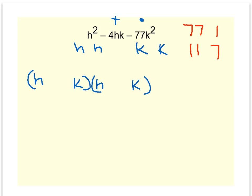What could add to be a negative 4? Sure enough, a positive 7 and a negative 11 will work because negative 11 times 7, a positive 7 is a negative 77. Negative 11 plus 7 is a negative 4.